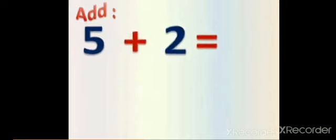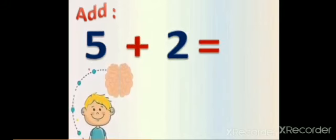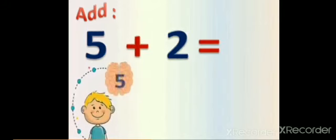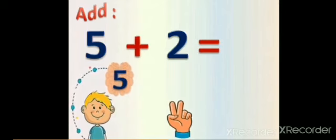5 plus 2 equals? At first, put the big number in your mind. And the big number here is number? Super — 5! And put the small number on your fingers. The small number here is number 2. Then count after the big number. Count after 5: 6, 7. Then 5 plus 2 equals? 7.